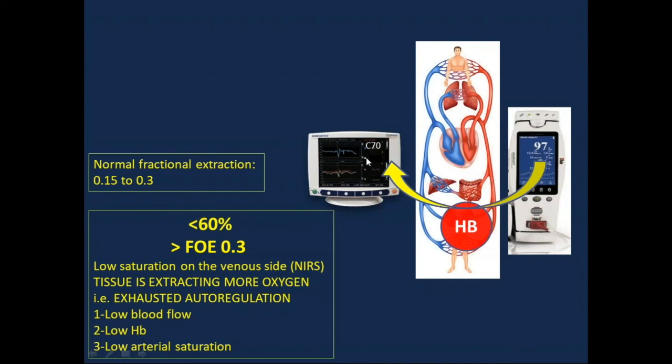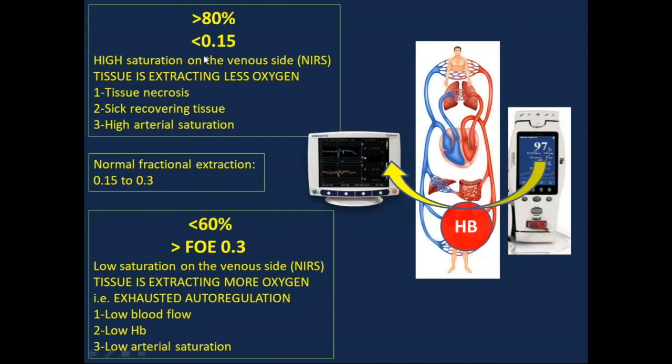So the number on the arterial side is low to begin with, so the number on the venous side will also be low. Or it can be high, higher than 80%, or associated with low fractional oxygen extraction. That can be due to tissue necrosis or sick recovering tissue.